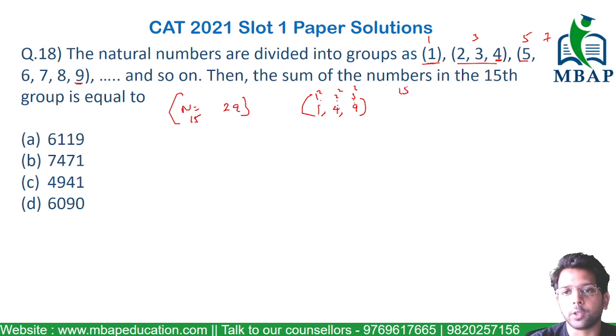So the 15th group's last number will be 15 squared, which is 225. The number of terms is 29, so it's going to be n by 2. How do you find the sum of terms of an AP? It's given by n/2 times (first term plus last term). The last term is 225 and there are 29 terms.